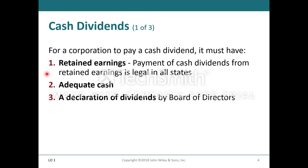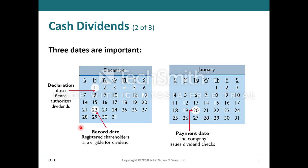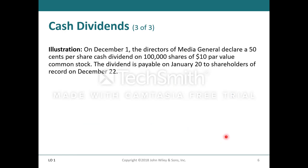Payment of cash dividends from retained earnings is legal in all states. There are three important dates: the declaration date, when the board authorizes the dividends — illustrated as December 1st; the record date, when registered shareholders are identified as eligible for dividends — December 22nd; and the payment date, when the company issues dividend checks — January 20th. For example, the directors of Media General declared a 50 cents per share cash dividend on 100,000 shares of $10 par value common stock.